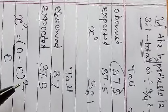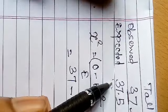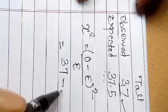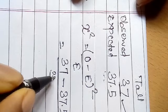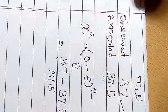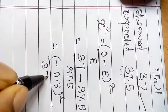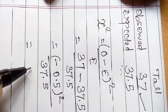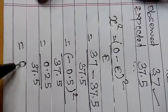For tall plants: (37 minus 37.5) whole square divided by 37.5 = (−0.5)² / 37.5 = 0.25 / 37.5 = 0.006. This is the chi-square value for the first observation.